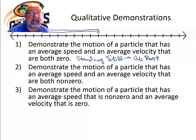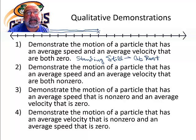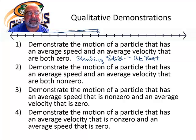Now let's take a look at the next example. Demonstrate the motion of a particle that has an average velocity that's non-zero and an average speed that is zero. What this means is that we travel zero distance but we have a displacement. That's not possible. So four is not a possible situation — we could never do that.